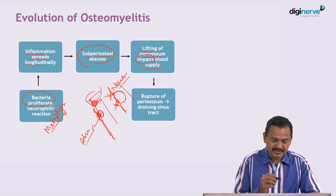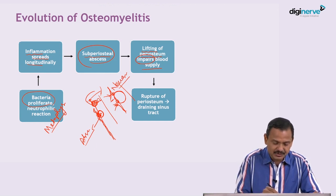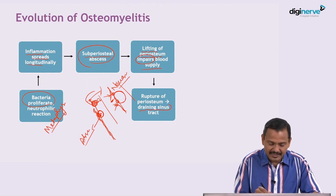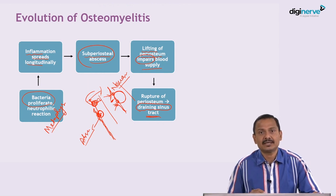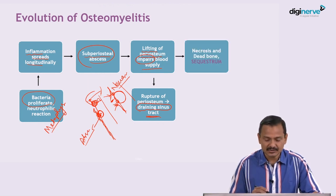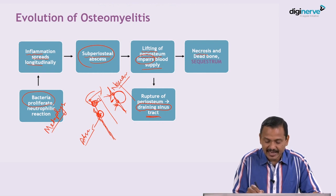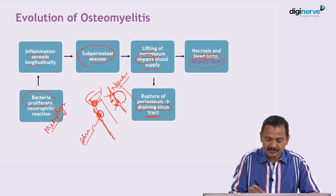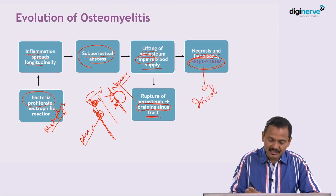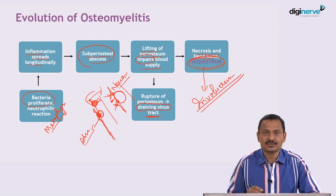Once there is necrosis and lack of blood supply, this rupture of periosteum will lead to a draining sinus tract. In addition to that, this necrotic dead bone can be known as sequestrum, and there can be new bone formation in chronic osteomyelitis that surrounds the sequestrum, and that is called as involucrum. Involucrum is the new bone that surrounds the dead bony sequestrum.